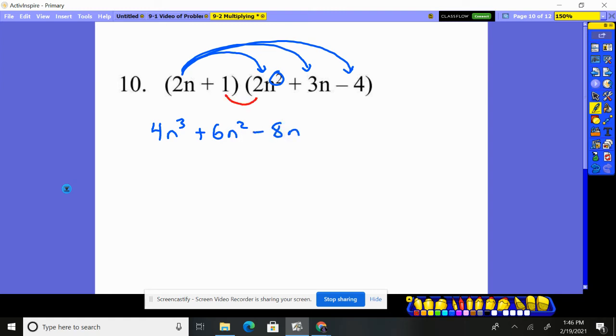Now let's do the one. That's easy enough because anything times one is itself. So one times 2n squared is 2n squared. One times 3n is 3n. One times negative four is negative four.